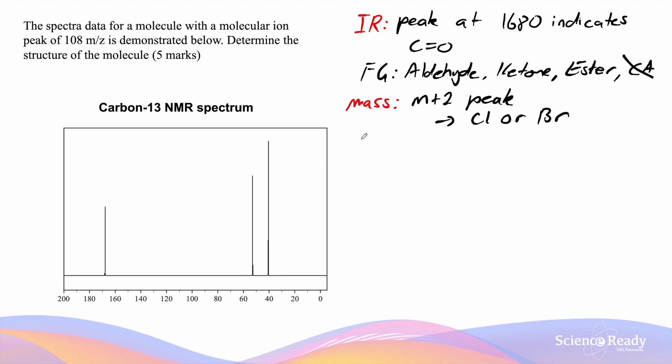Next we'll look at the C13 NMR spectrum. The carbon-13 NMR spectrum has three peaks which indicates to us that there are three carbon environments. From here we can try and work out what the molecular formula is going to be.